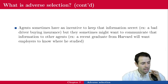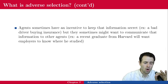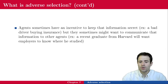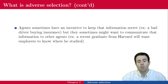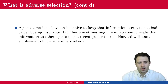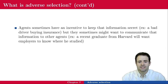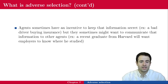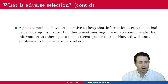Sometimes, however, agents might want to communicate that information to other agents. For instance, think about a recent graduate from Harvard — he will definitely want employers to know about where he studied. He knows that Harvard is considered a high-profile school, so he knows he has better chances of getting employed and a higher wage if he mentions he went to Harvard. That will be covered in the second part of the lecture — the part about signaling.